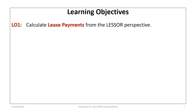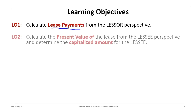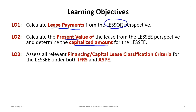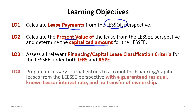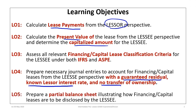The first is to review how to calculate the lease payments from the lessor perspective. The second is to calculate the present value of the lease from the lessee perspective and determine how much is to be capitalized. Third, to assess all relevant financing or capital lease classification criteria for the lessee under both IFRS and ASPE. Fourth, to prepare necessary journal entries from the lessee perspective with a guaranteed residual value where the lessor rate is known and there is no transfer of ownership. Finally, to prepare a partial balance sheet illustrating how this finance or capital lease should be disclosed by the lessee.